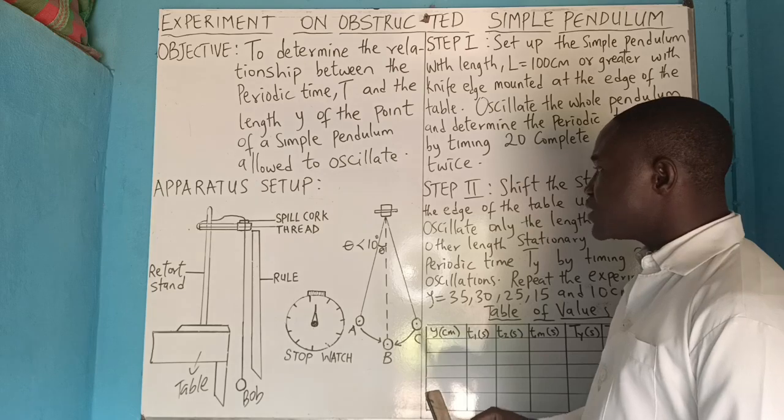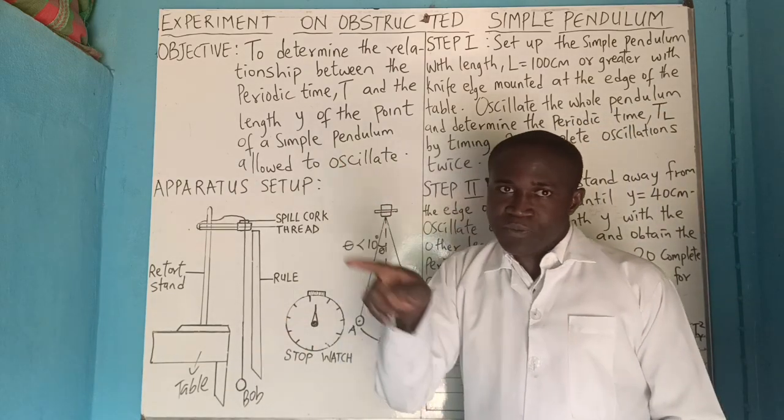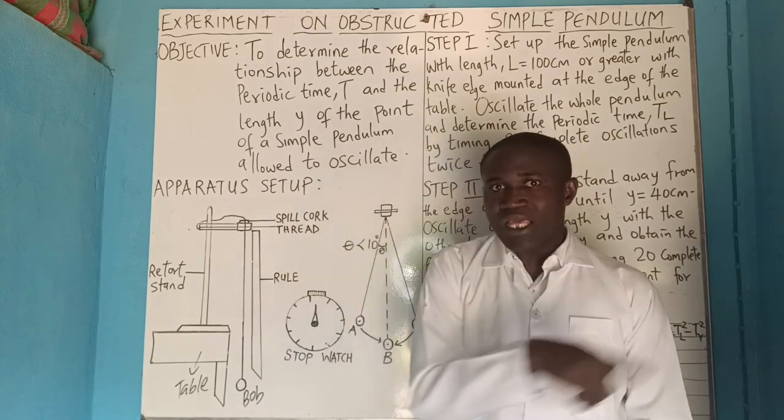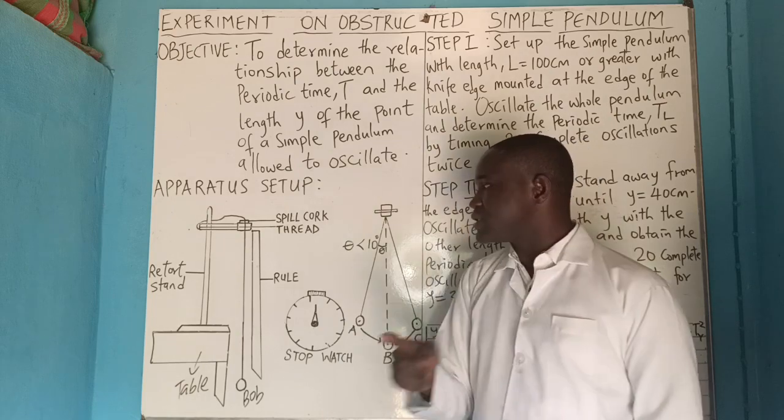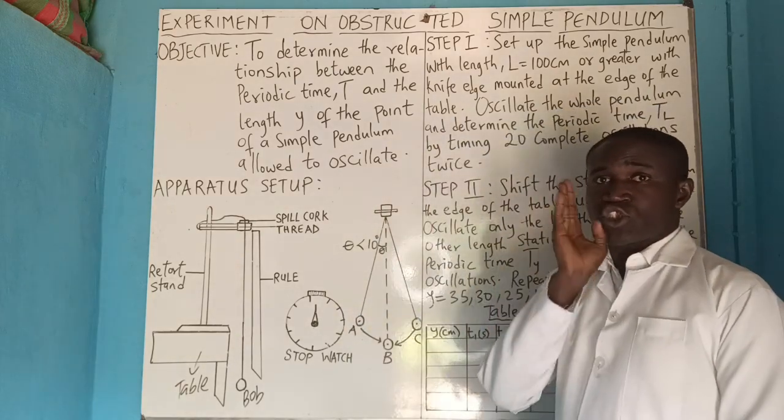What it means is that we will displace it at a small angle. We will displace this thread at a small angle so that it will oscillate for 20 oscillations. And we will do it two times.